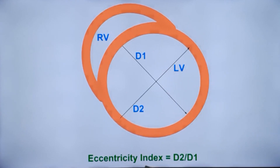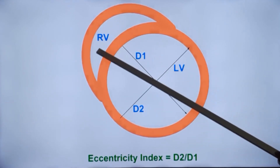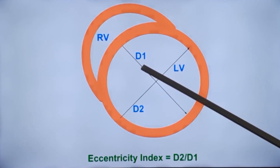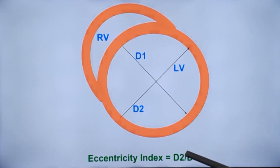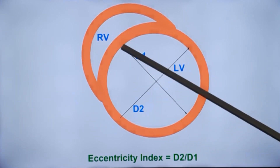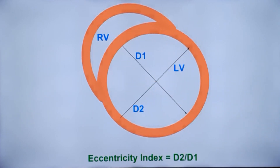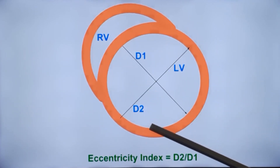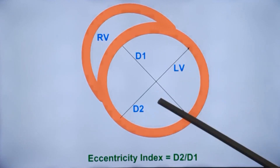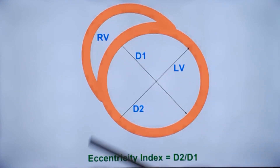In a normal person, the eccentricity index will be almost equal to 1. When there is right ventricular volume overload, the septum gets compressed in diastole, so the ratio will be abnormal in diastole. In systole, because of the higher left ventricular pressure, the shape will be circular, so the ratio will not be abnormal in systole. This diastolic overload pattern is seen in conditions like atrial septal defect, when the right ventricle is having diastolic overload.